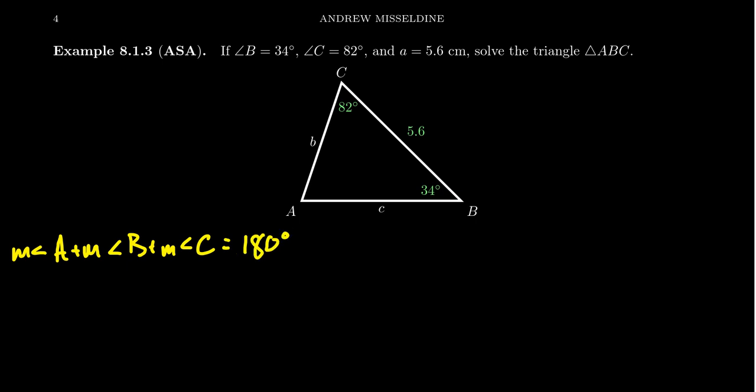So if you know two of the angles of a triangle, you can find the measure of the last one. The measure of angle A is just going to be 180 degrees, take away 34 degrees, because that's B, take away 82 degrees, because that's C. And so if we take 34 and 82 away from 180, that's going to leave behind 64 degrees. Just a simple subtraction right there.